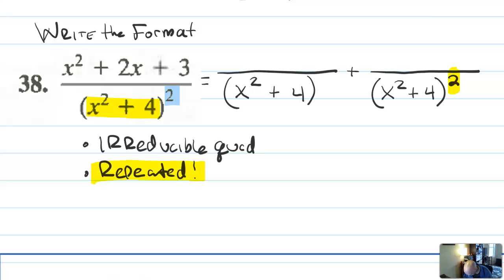Now, because it's an irreducible quadratic, when I write the tops, the numerators, I can't just write a and b. I have to write a x plus b. So on the top, I'm going to write a x plus b. And for the second factor, I'm going to write c x plus d.